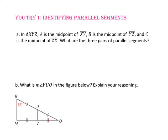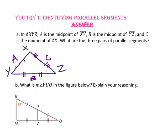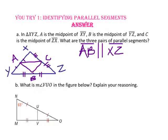Pause the video and do U-try number 1. In triangle XYZ, point A is the midpoint of segment XY, point B is the midpoint of segment YZ, and point C is the midpoint of segment ZX. What are the three pairs of parallel segments? Let's start by drawing triangle XYZ and their three midpoints, then connect the midpoints to create mid-segments. Side AB is parallel to side XZ, side BC is parallel to side XY, and side AC is parallel to side YZ.